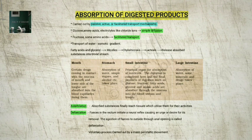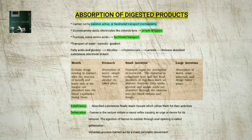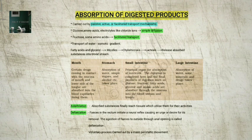Absorption is the process by which the end products of digestion pass through the intestinal mucosa into the blood or lymph. It is carried out by passive, active, or facilitated transport mechanisms. Small amounts of monosaccharides like glucose, amino acids, and some electrolytes like chloride ions are absorbed by simple diffusion, depending upon the concentration gradient. Fructose and some amino acids are absorbed with the help of carrier ions like Na⁺ by facilitated transport. Transport of water depends upon the osmotic gradient.